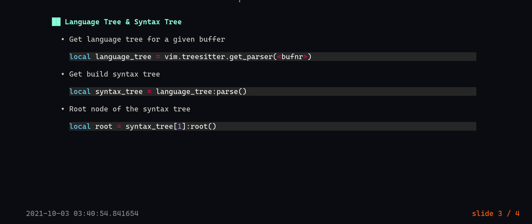Next, we have language tree and syntax tree. It's super easy to get the language tree — you can call getParser and pass in the buffer number. It will return the language tree which you can use to parse a new syntax tree. We are going to get the root node from the syntax tree, and the query will be evaluated against the root node.